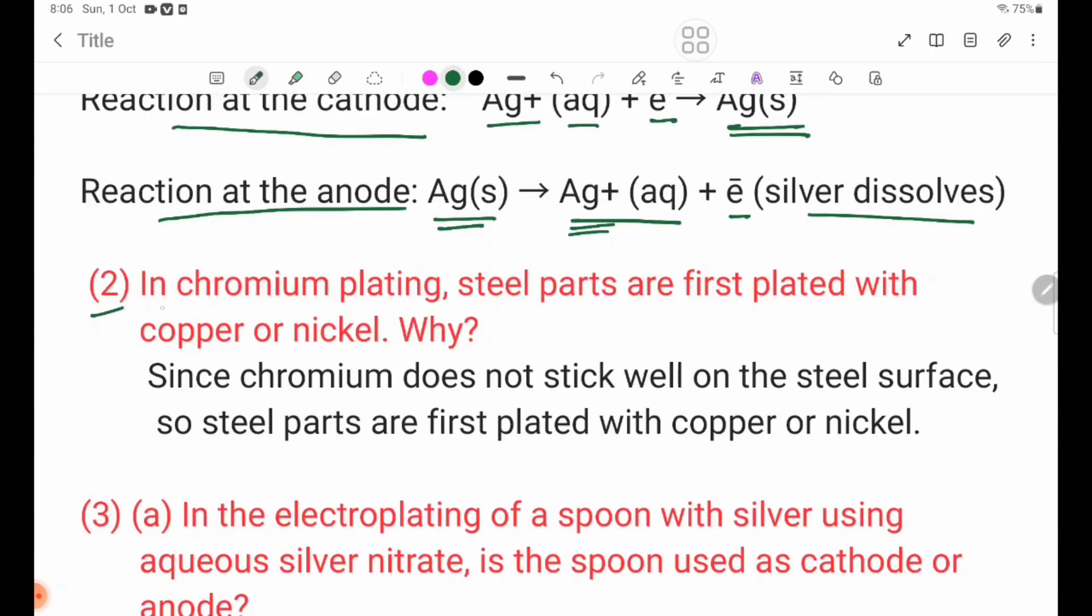Number 2, in chromium plating, steel parts are first plated with copper or nickel. Why?